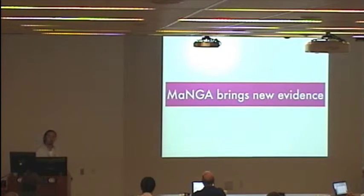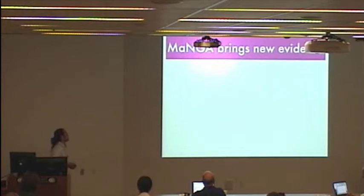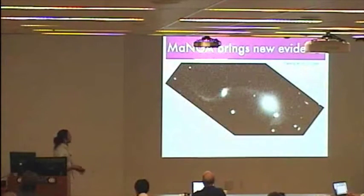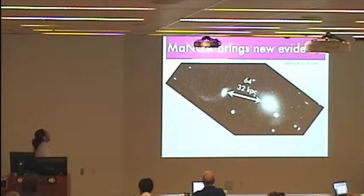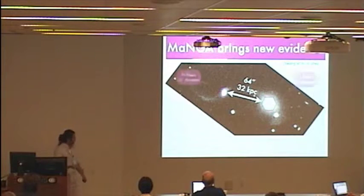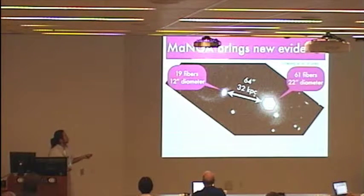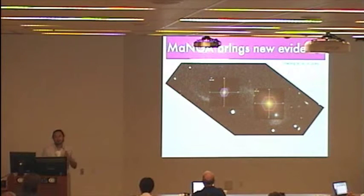But with MaNGA comes new evidence. And this new evidence comes in the form of this interacting system, which is now part of a larger group, and is separated by 32 kiloparsecs. MaNGA has observed both these galaxies with two hexagonal bundles that are 12 and 22 arc seconds in diameter, corresponding to 19 and 61 fibers. And here is the color composite image. Keeping with the theme of MaNGA,